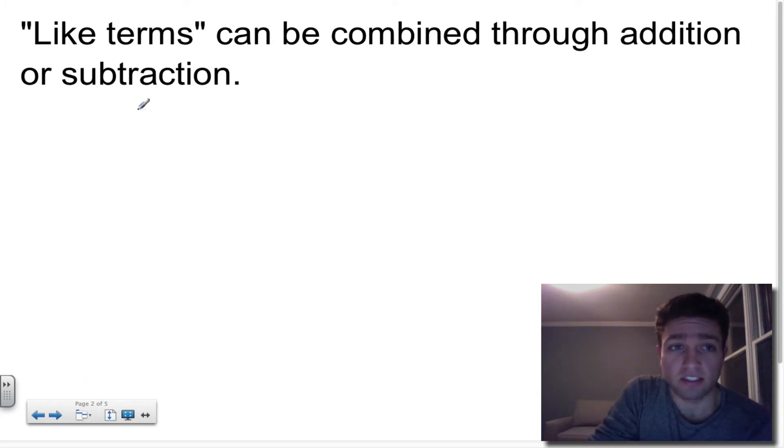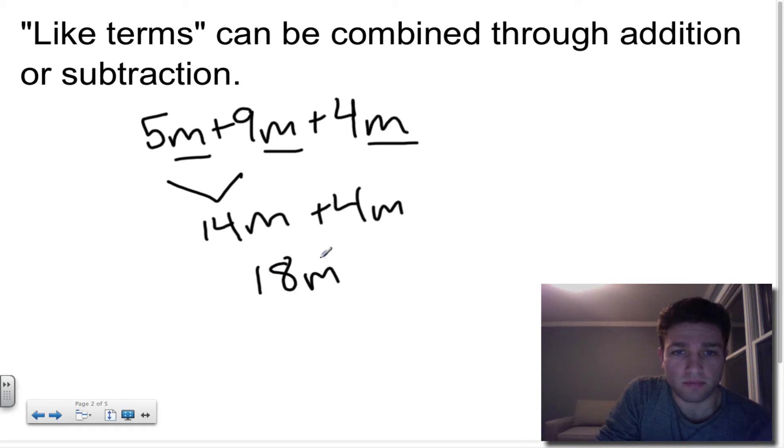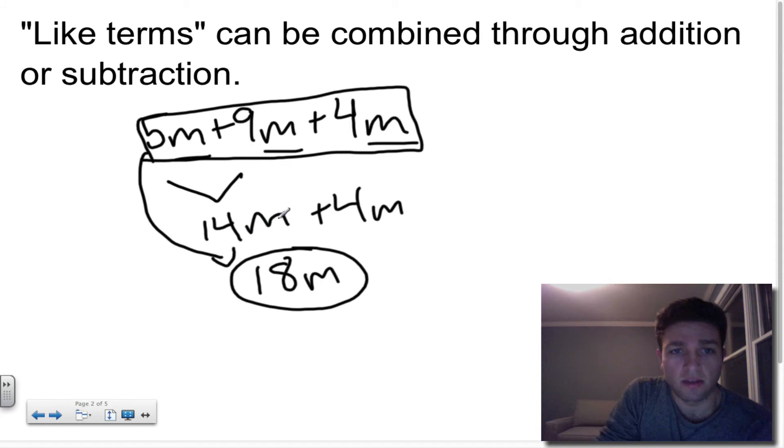So let's look now at combining like terms. Like terms you can combine through either addition or subtraction. So let's look at an addition example first. I know that this is something we've done before, but it's always good to review. I already can see these are like terms, because m, m, and m are the same variable factors. If I take my number that's in front of the variable, that's what I'll be adding to combine these together. So I really have 5 plus 9, which is 14, plus 4m, and that leaves me with 18m.